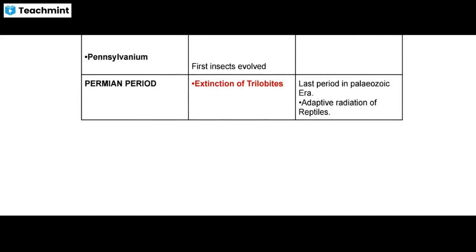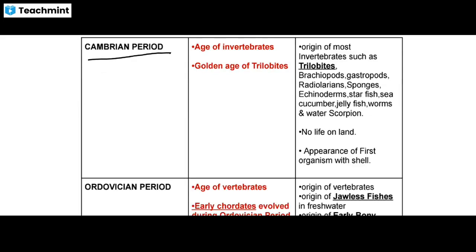The first period is the Cambrian period. The Cambrian period is the age of Invertebrates — we call it the age of Invertebrates.